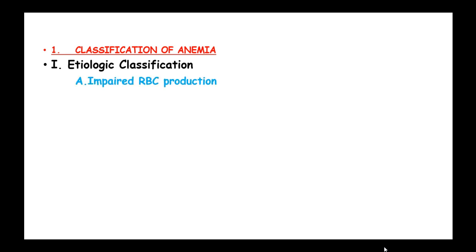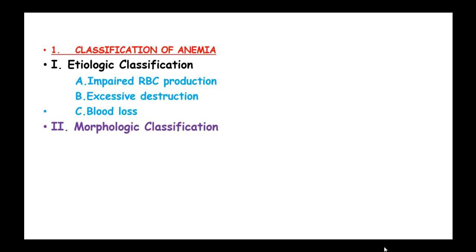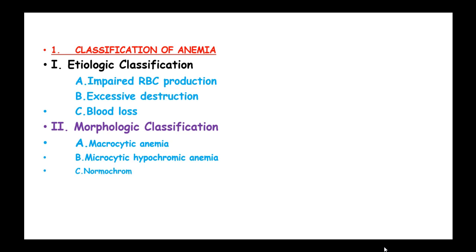Classification of anemia: we have etiologic classification, where we classify anemia according to the cause, and this includes impaired red blood cell production, excessive destruction, and blood loss. In morphologic classification, we have macrocytic anemia, microcytic hypochromic anemia, and normochromic normocytic anemia.